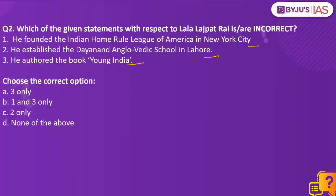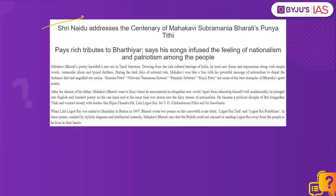This PIB article talks about the 100th birth anniversary of Tamil writer, Indian independence activist and social reformer Subramanya Bharati, also known as Mahakavi Bharati. This social reformer fought for the emancipation of women, protested against child marriage, and stood for reforming Brahminism. In this PIB article, there is a mention of Lala Lajpat Rai, on whom Mahakavi Bharati wrote two poems — Lajpat Rai Thudi and Lajpat Rai Pralabham — when Lajpat Rai was exiled to Burma in the year 1907.